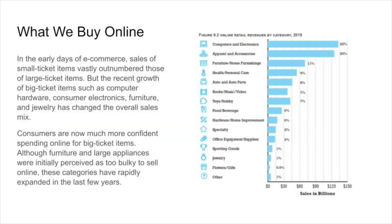Speaking of what we buy online — in the early days of e-commerce, small items were the favorite thing to buy online. But if you look today, it's broadened out quite a bit. You can see in this graphic that consumers are much more confident spending online now than they ever were, from small items all the way to big ticket items.